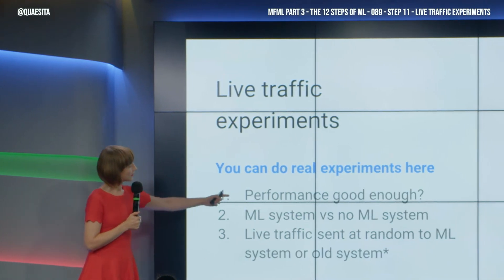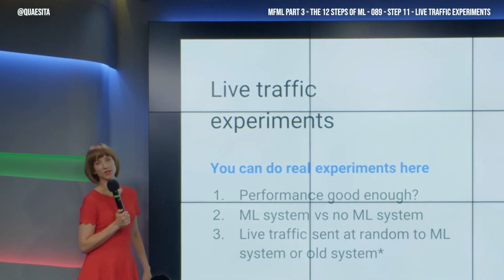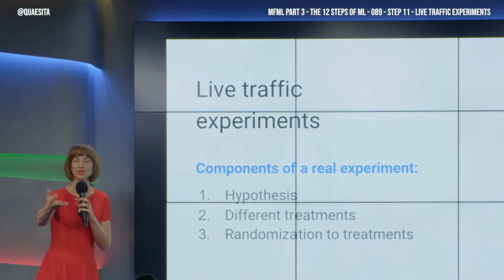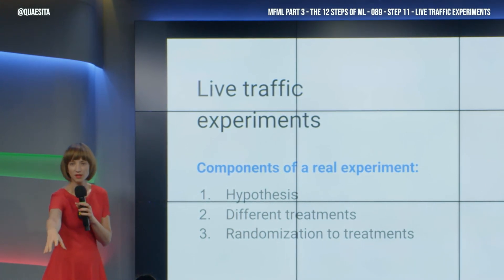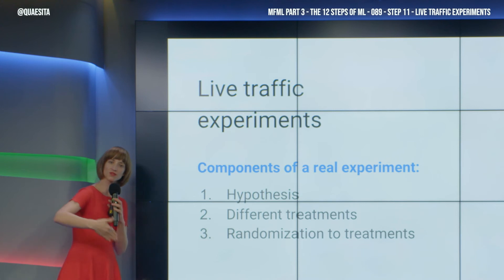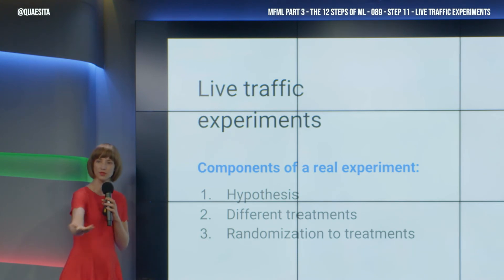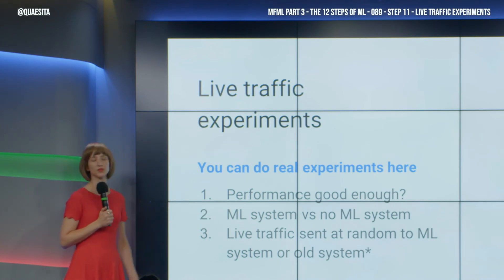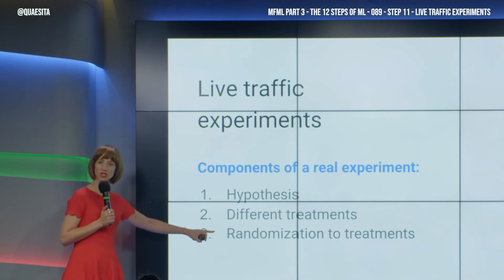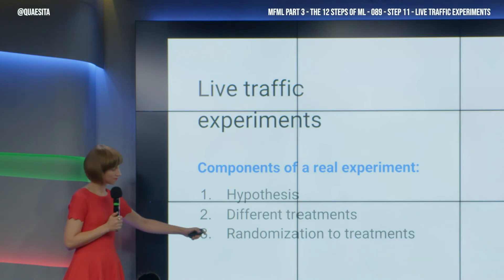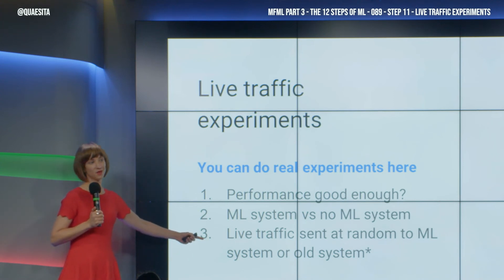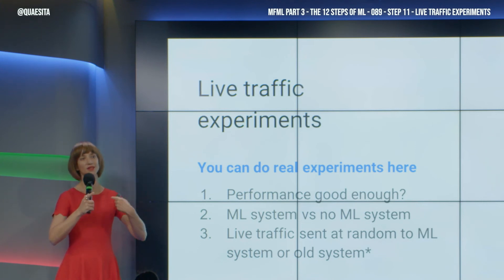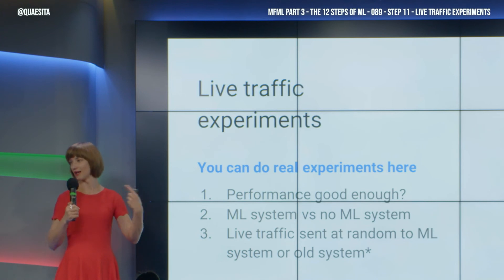First, a hypothesis — that's the question of: is performance good enough to launch? Next, different treatments. We can't just passively observe data; we must impose our will on the universe. We must do different things to different parts of reality, so different units get different treatment. We can serve some users with our system and some users with the alternative. And finally, who gets which treatment is chosen at random — well, that depends on your infrastructure, which is why you're thinking about building all this infrastructure up front.